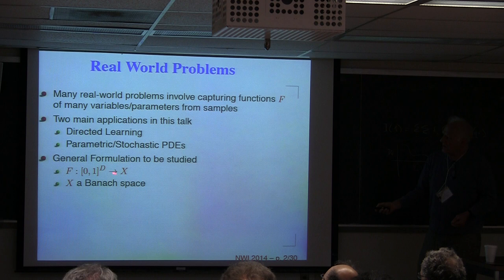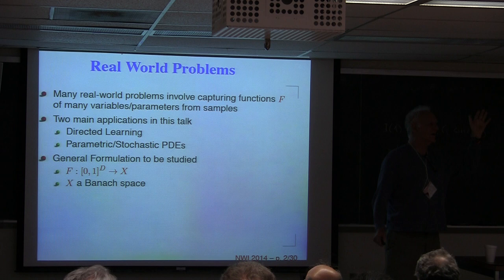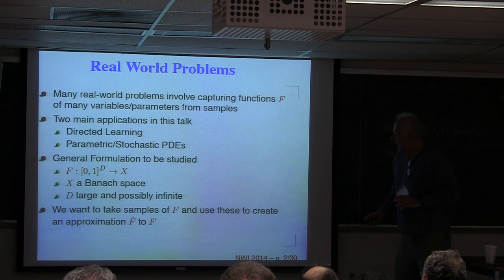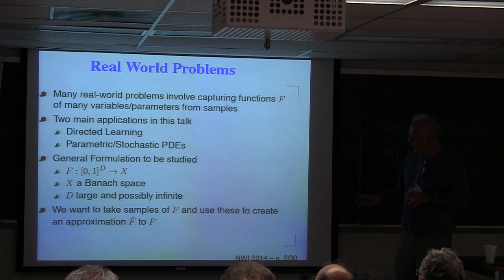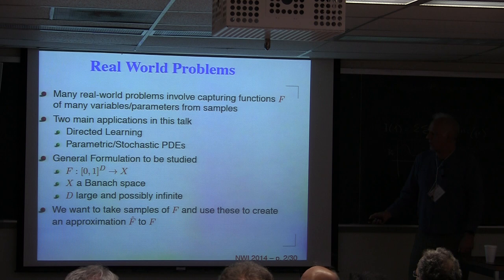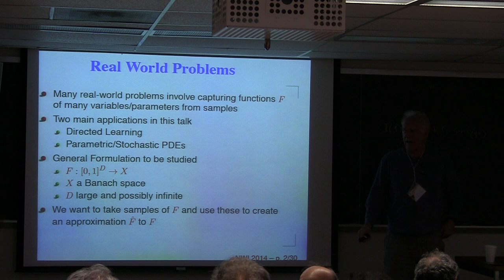You can formulate a formulation that encompasses everything I'm going to talk about: I have a function mapping [0,1]^D into a Banach space, and capital D is large — in fact for stochastic PDEs, capital D is infinity. The problem we want to attack is: we're allowed to sample F, maybe given a budget of samples, and we want to understand where we should sample and how well we can recover F from those samples.